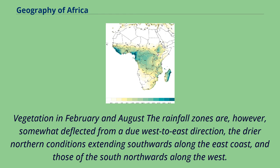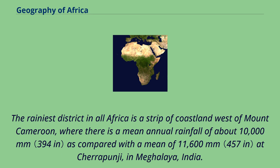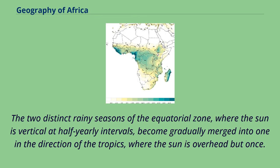The rainfall zones are somewhat deflected from a due west-to-east direction, the drier northern conditions extending southwards along the east coast, and those of the south northwards along the west. Within the equatorial zone certain areas, especially on the shores of the Gulf of Guinea and in the upper Nile basin, have an intensified rainfall, but this rarely approaches that of the rainiest regions of the world. The rainiest district in all Africa is a strip of coastland west of Mount Cameroon, where there is a mean annual rainfall of about 10,000 mm, as compared with a mean of 11,600 mm at Cherrapunji, in Meghalaya, India. The two distinct rainy seasons of the equatorial zone, where the sun is vertical at half-yearly intervals, become gradually merged into one in the direction of the tropics, where the sun is overhead but once.